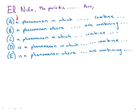A phenomena versus is a phenomena, in which versus where, and combine versus are combining. So we're going to compare those three splits.